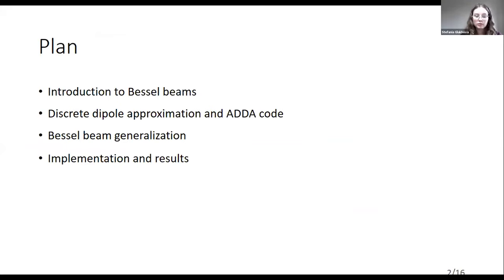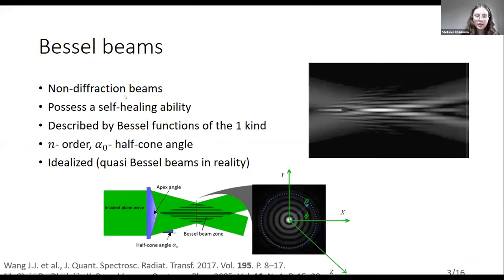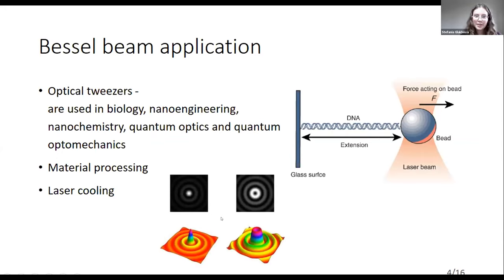Then about Bessel beam generalization and finally about the implementation and results. Quite popular Bessel beams belong to the class of non-diffracting beams. Moreover, they are able to reconstruct their profile after encountering small particles, as shown in the picture above. The main parameters of a Bessel beam are its order and half-cone angle, as presented in the Bessel beam generation scheme shown below.